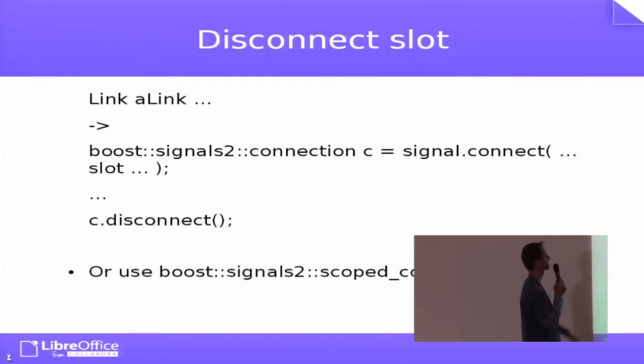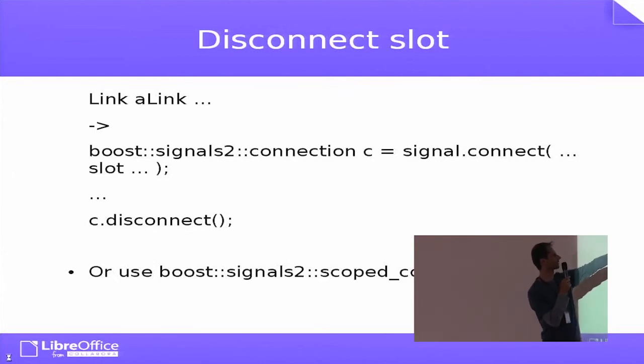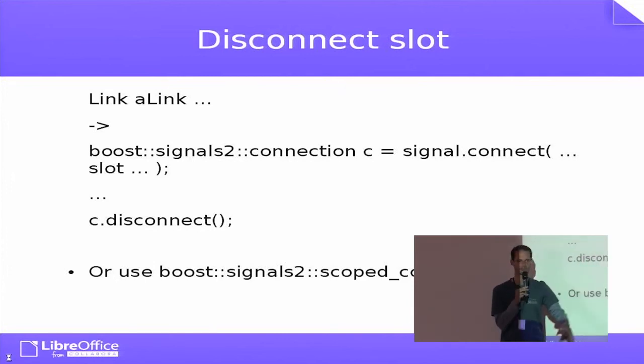Oh, sorry, this is wrong. Sometimes you also need to disconnect, because otherwise you would have dangling pointers. So you can just have an object which will track the connection between them, and you either disconnect explicitly or you will just use the class which will do it automatically.